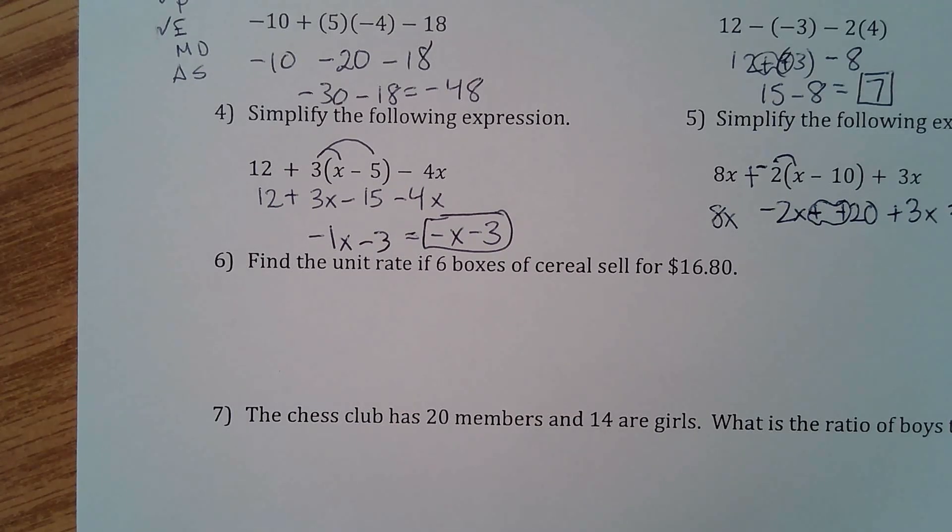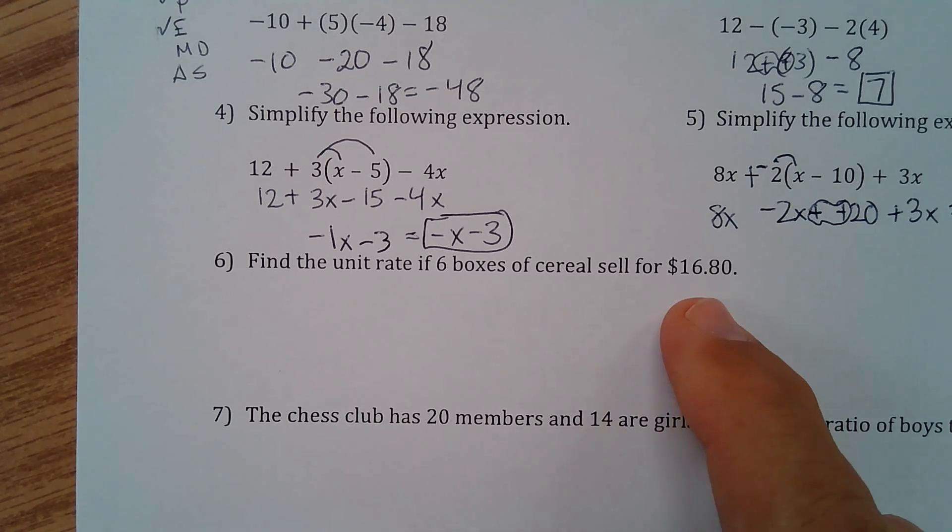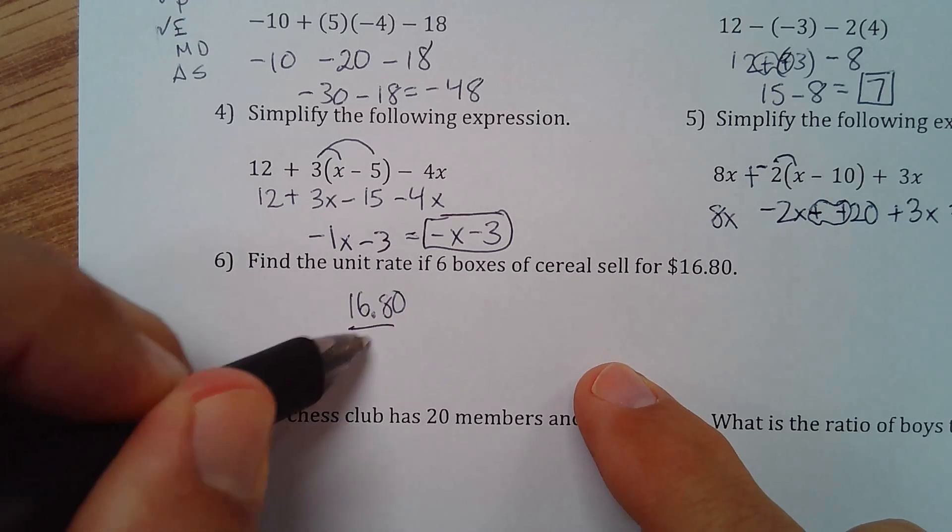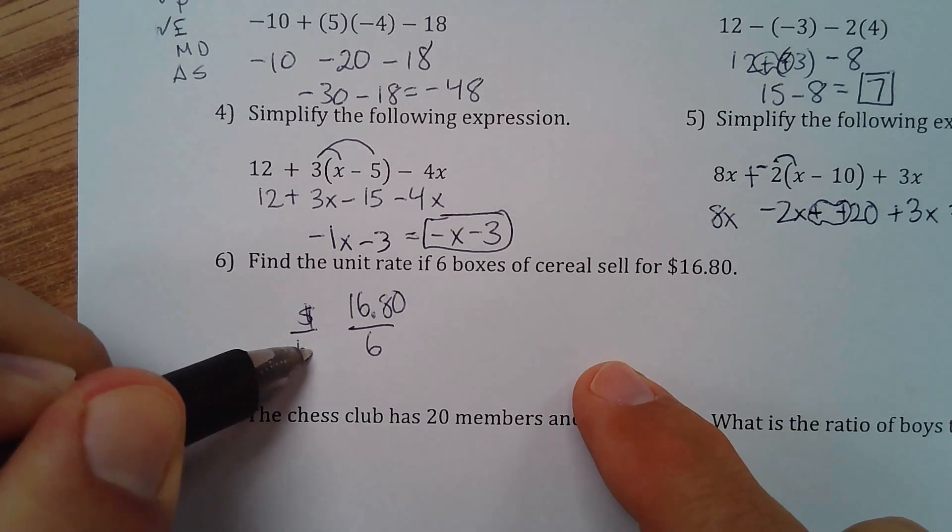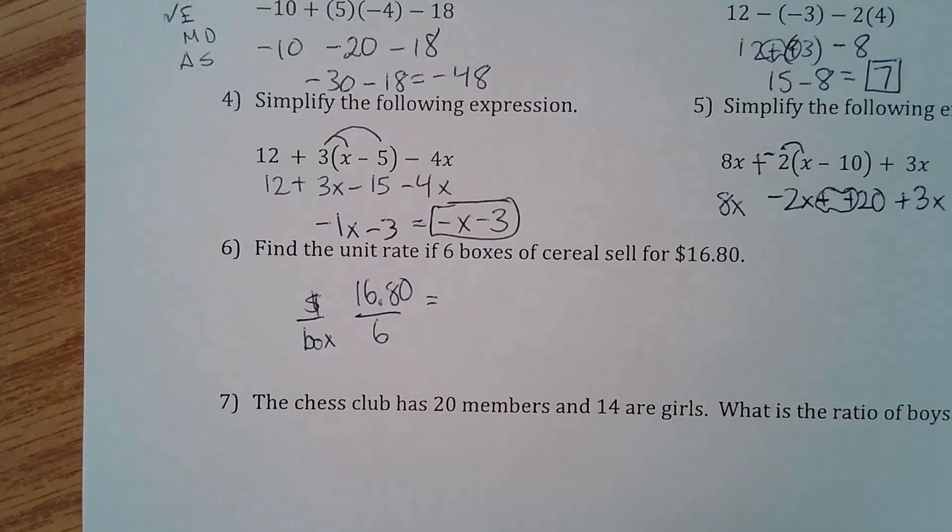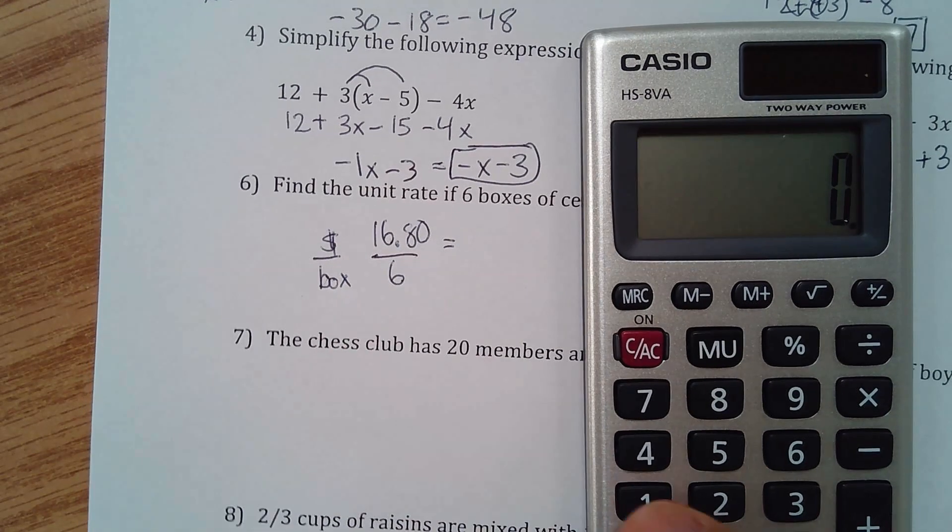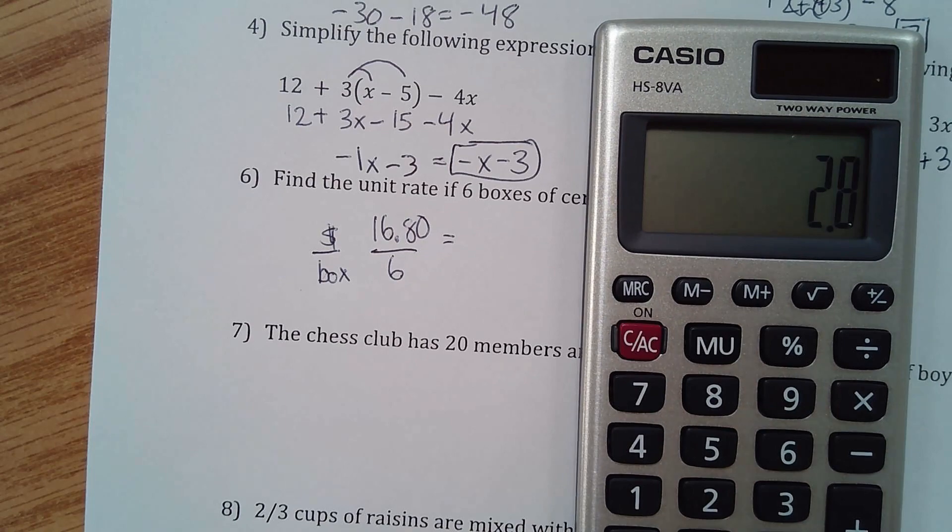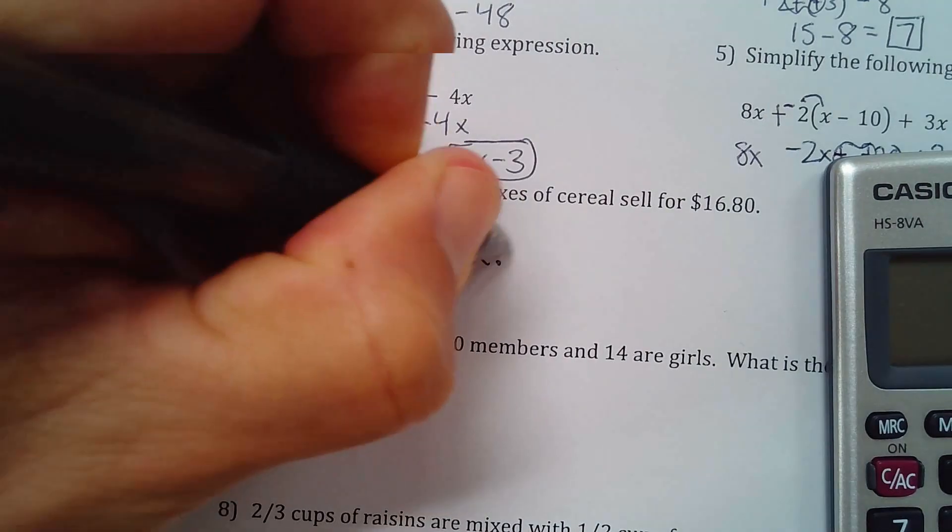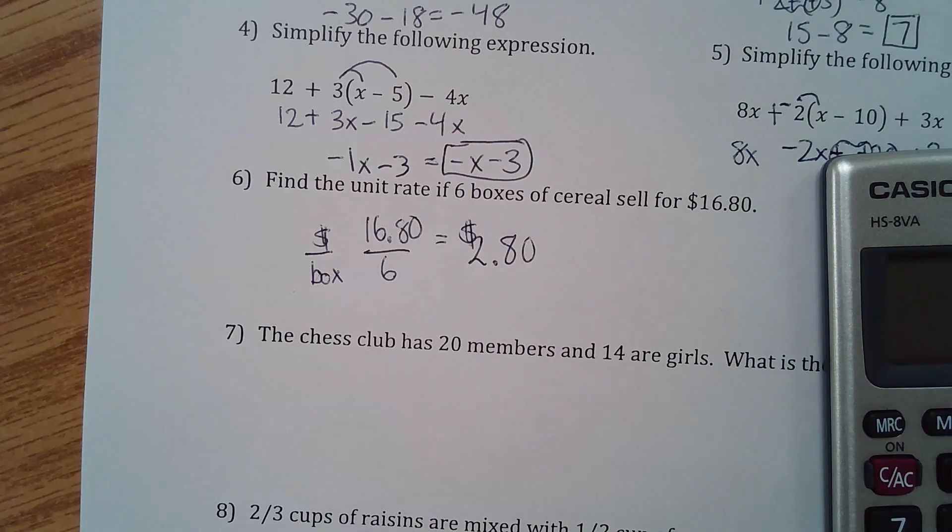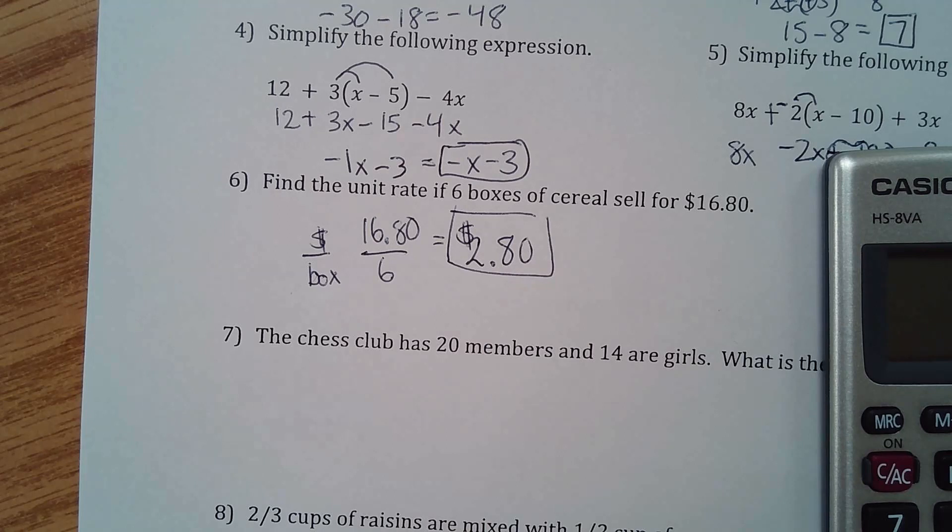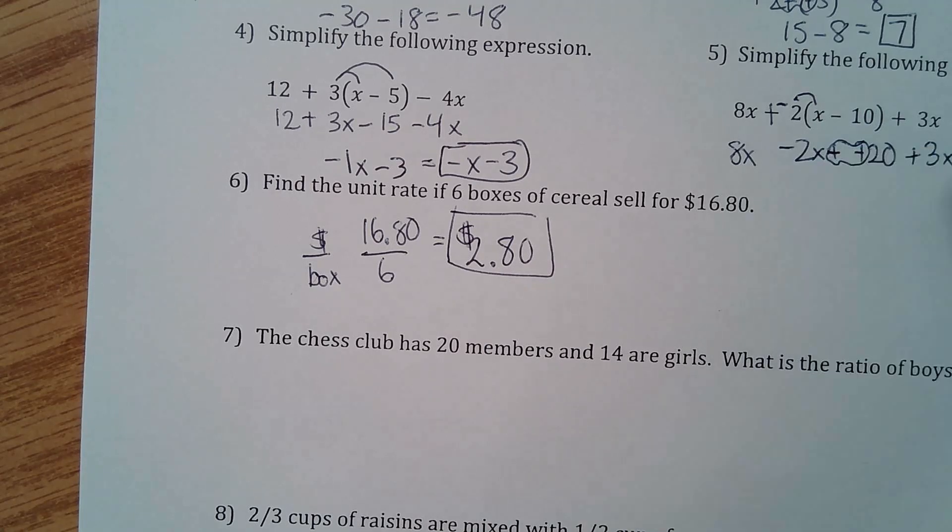Find the unit rate. The unit rate means you make a rate with a 1 for a denominator. So we have 16.80 divided by 6. So we have how much money per box of cereal. And let's see. I got a calculator here. I'm just going to bust this out and do it with the calculator. And here's my calculator. So I have 16.8 divided by 6 is 2.8. So that 2.8 means you have $2.80. That's the unit rate. That's the cost for one box of cereal. That's what the unit rate means.